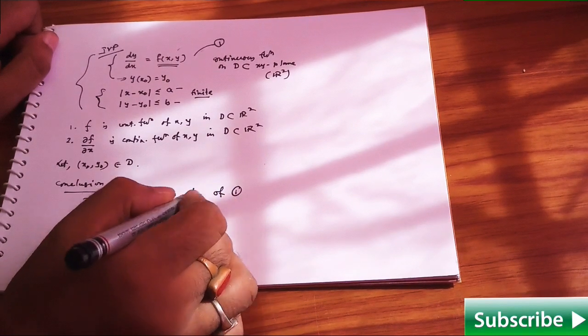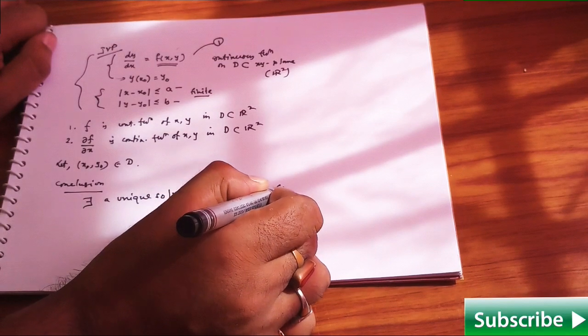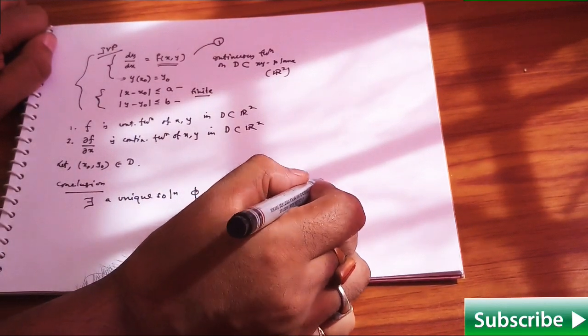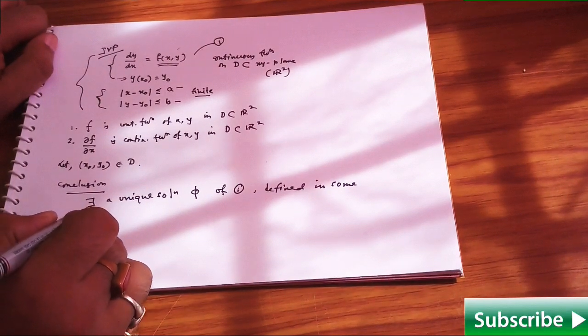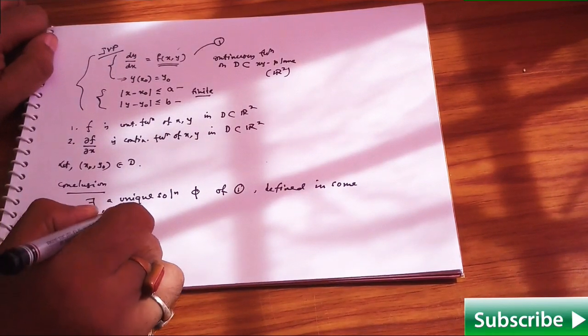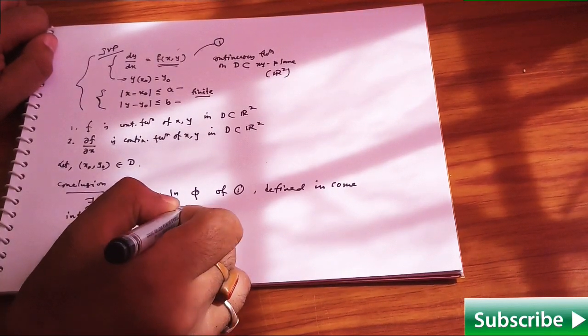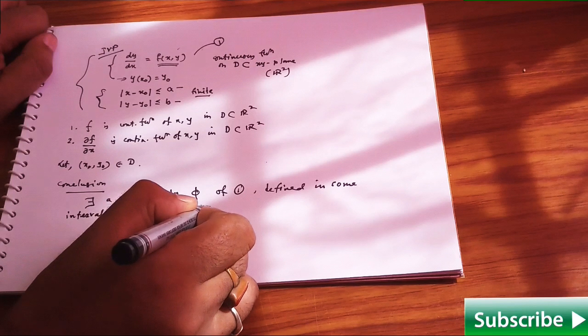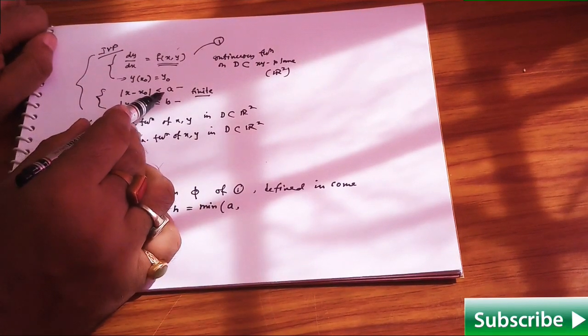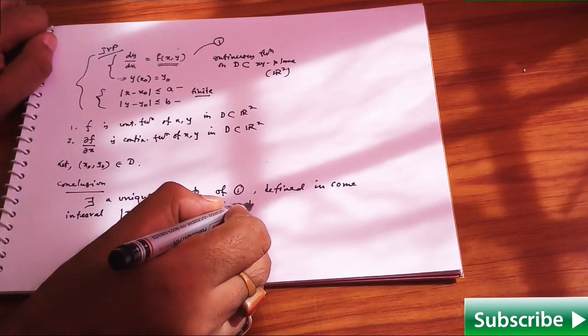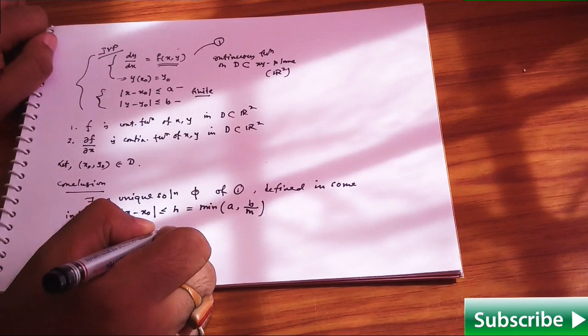Phi is defined in some interval. Here comes the interval: modulus of x minus x naught less than or equal to h, where this h is given by the minimum of a and b/m.